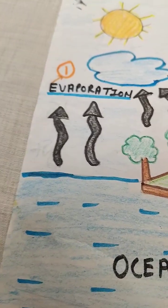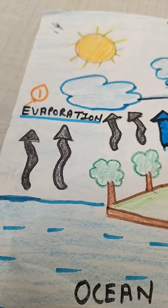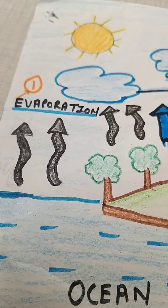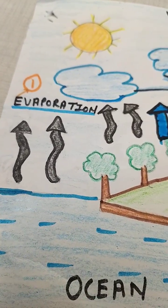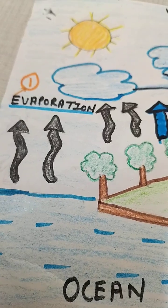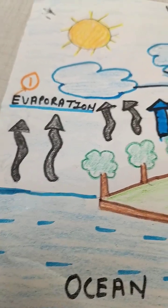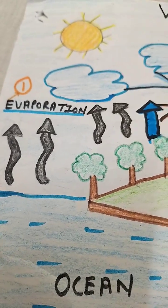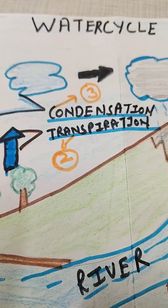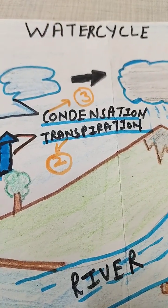The first process is evaporation. Evaporation means when the sun heats up water from oceans, rivers and lakes, and then it turns into water vapor and rises into the air.